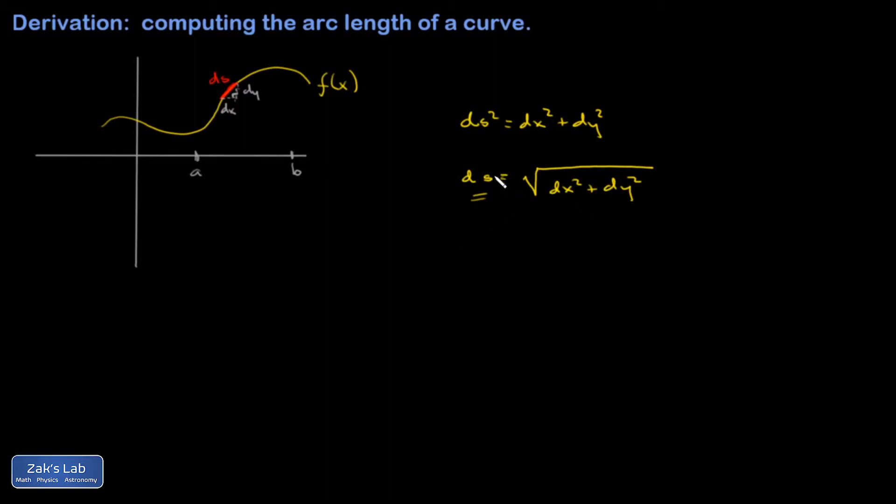So what I'm going to do is factor a dx out of both terms under here. So I'll go like this. And pulling out the dx, so the square root of dx squared is just dx. I'm left with, in the square root, a 1 plus dy/dx. In other words, the derivative of the function with a dx outside of it.